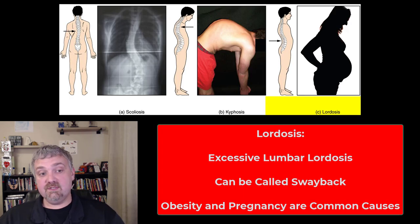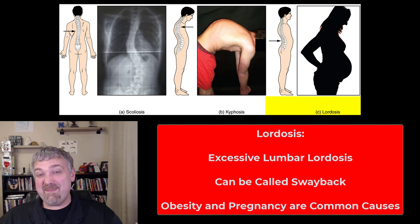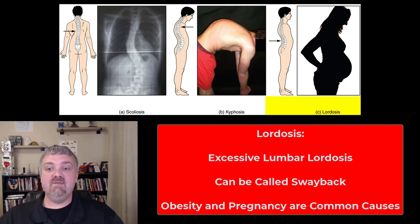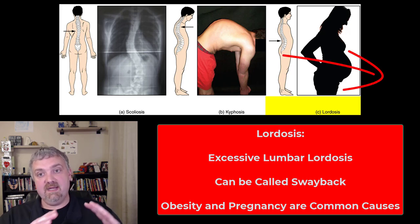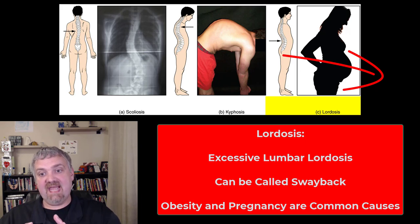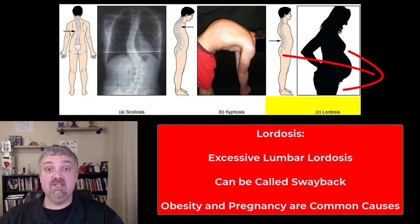Then you have lordosis — an excessive lumbar curve, often called swayback. This is most common with pregnancy or abdominal obesity, where the weight in the anterior of the lumbar spine will actually pull the lumbar vertebrae and force them to sag forward and also cause the pelvis to tilt anteriorly.